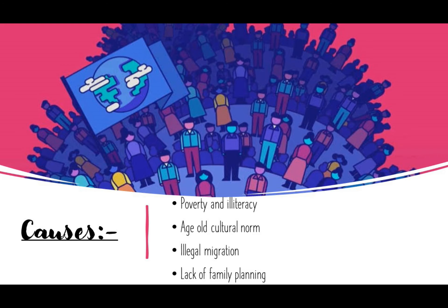Now, what are the main causes of overpopulation? First is poverty and illiteracy. Second is age-old cultural norms. Third is illegal migration, and the last one is lack of family planning.